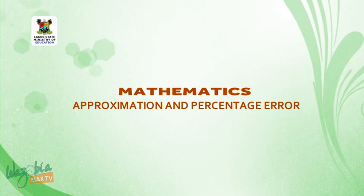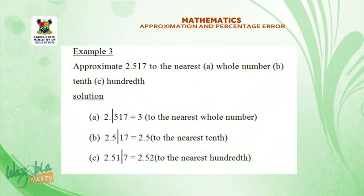Welcome back. Example 3. Approximate 2.517 to the nearest A, whole number, B, ten, C, hundred. Solution A, 2.517 is equal to 3 to the nearest whole number. B, 2.517 is equal to 2.5 to the nearest tenth. C, 2.517 is equal to 2.52 to the nearest hundredth.